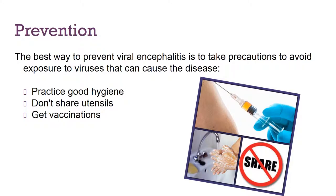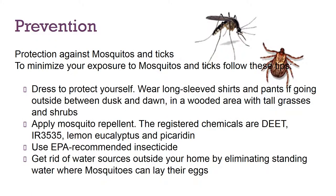The best way to prevent the disease is to take precautionary measures. Good hand hygiene is very important — don't share eating utensils, and get vaccinated, as vaccinations are important for our immunity. To protect yourself against mosquitoes and ticks, dress with long sleeves and long pants if you go outside during dusk to dawn hours, especially in wooded areas with tall grasses and shrubs. Apply plenty of mosquito repellent and get rid of standing water outside your home, as mosquitoes like to lay their eggs in it.